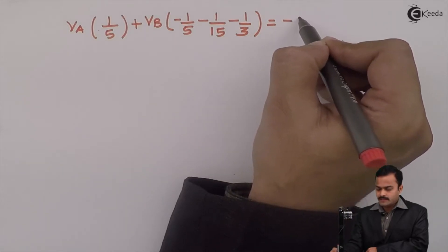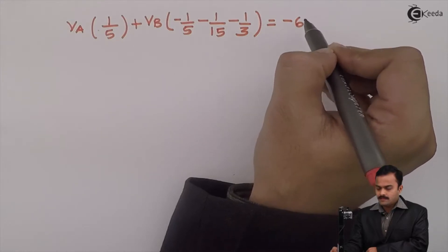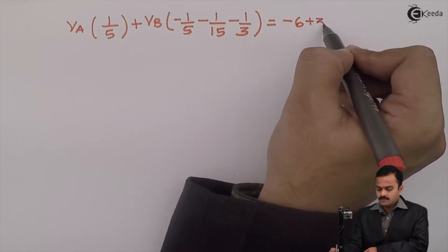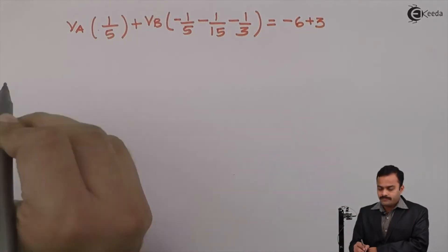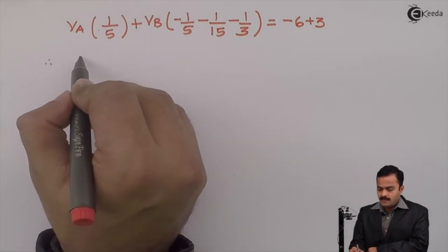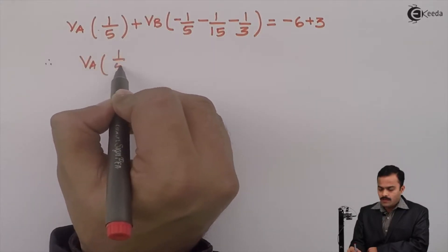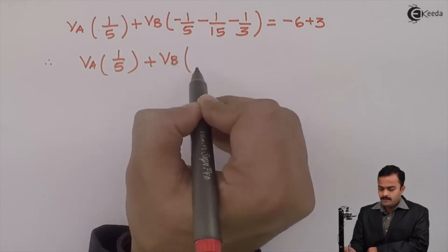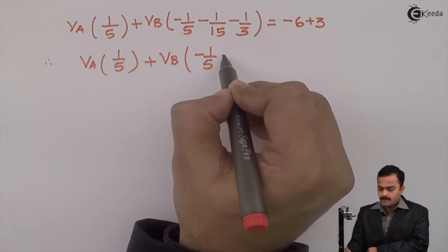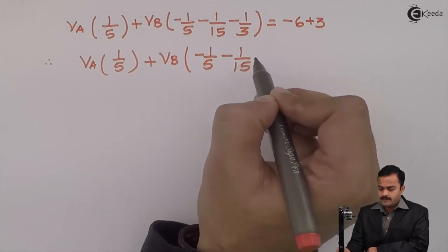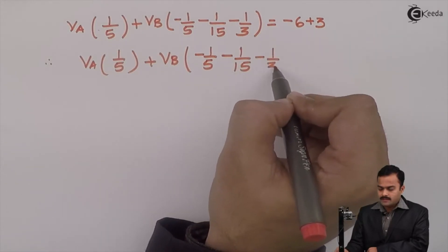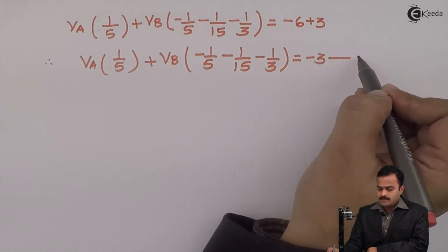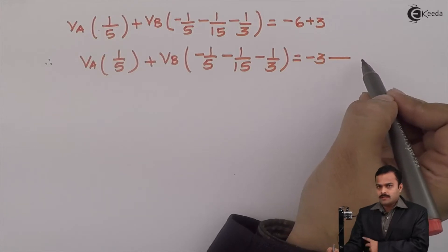Equals all constants I am putting on other side of equation. So it will be minus 18 by 3, which will be minus 6, and 3 will be there, so plus 3. So after simplifying, I will get VA 1/5 plus VB minus 1/5 minus 1/15 minus 1/3 equals minus 3. This will be equation number 2.